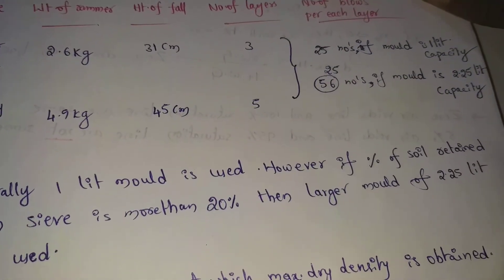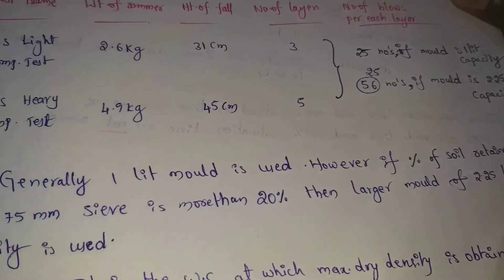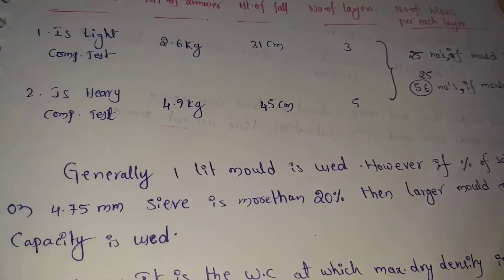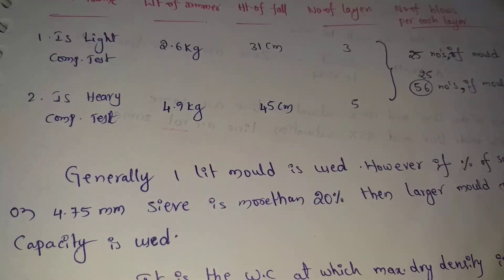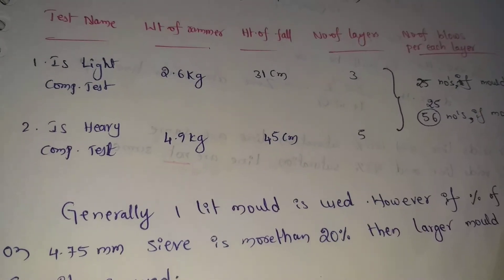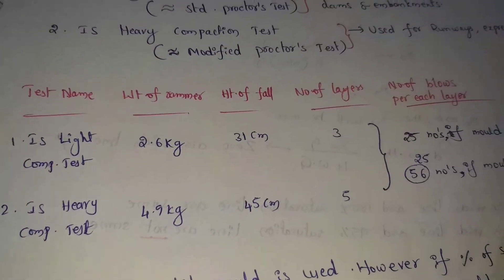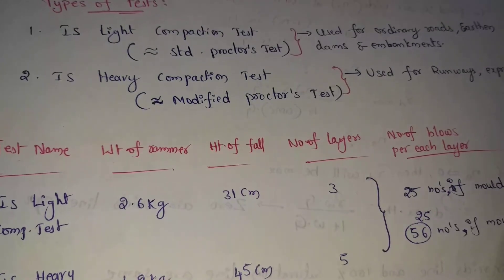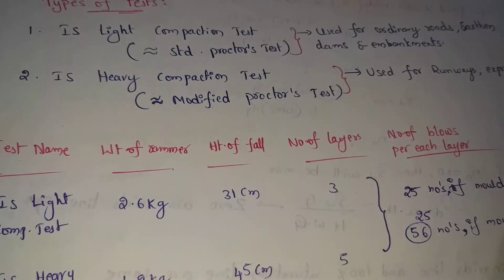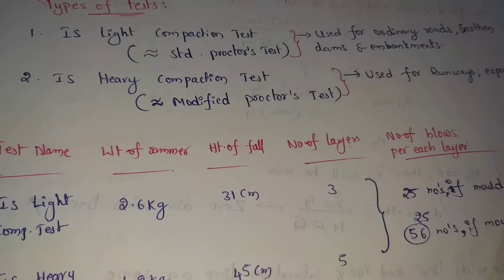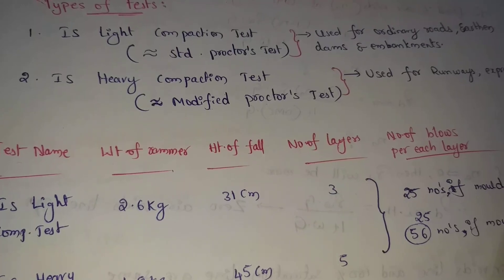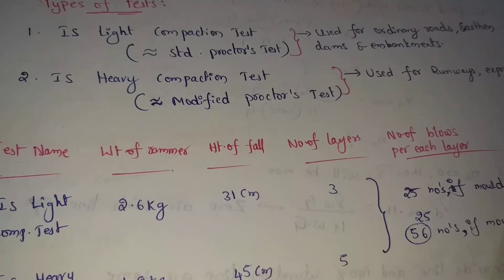In that case, the 2.25 liter mold is used. That covers the types of compaction test. Please like this video and don't forget to subscribe to my channel. Thank you for watching.